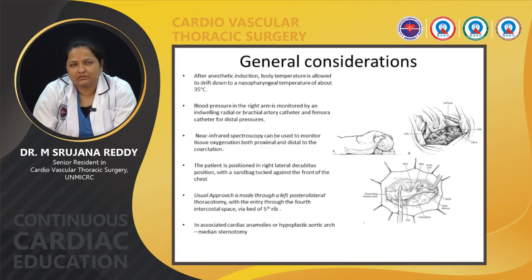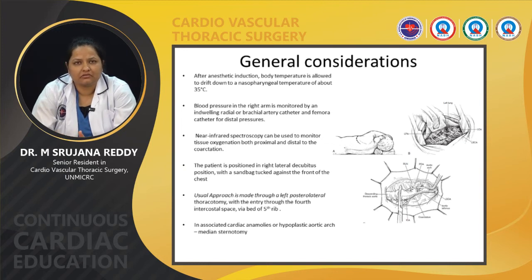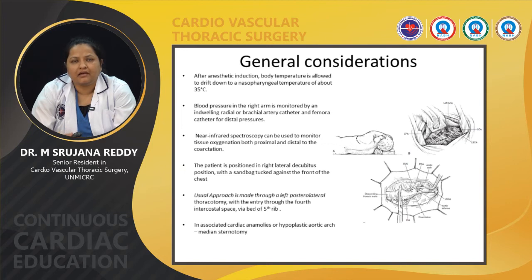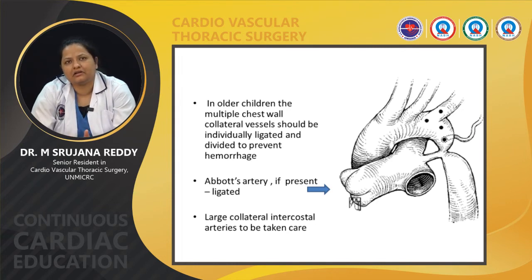Regarding surgery for coarctation of aorta, after anesthetic induction the temperature is usually allowed to drift to 35 degrees Celsius. Blood pressure in the right arm is measured by a radial or brachial arterial catheter, with a femoral catheter for distal pulses. NIRS can be used to monitor tissue oxygenation both proximal and distal to the coarctation. The patient is positioned in the right lateral decubitus position, and the usual approach is left posterolateral thoracotomy with entry at the 4th intercostal space or bed of the 5th rib. In older children, multiple chest wall collaterals should be ligated when visualized to prevent hemorrhage.